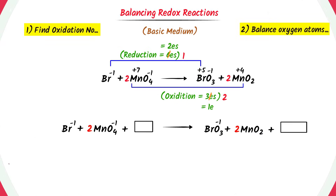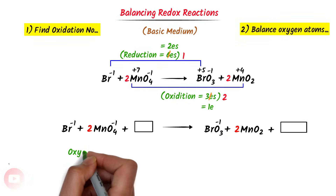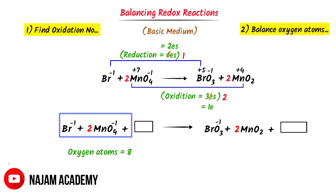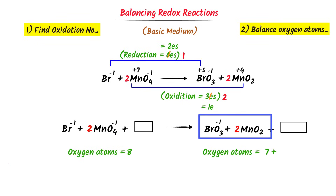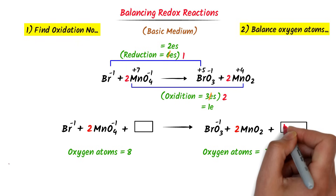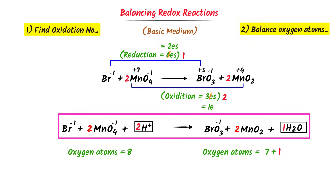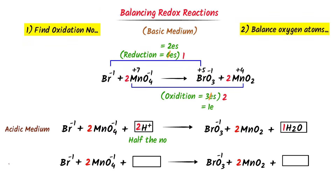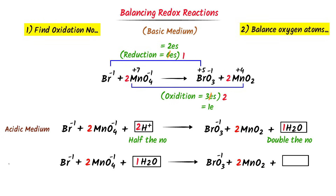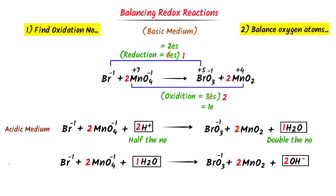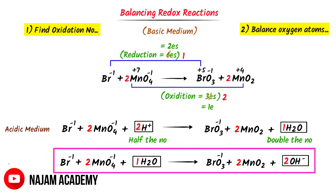The second step is to balance oxygen atoms. There are 8 atoms of oxygen in the reactants and 7 atoms in the products, so I place 1 water molecule on the product side. I double the number and place 2 hydrogen ions. This is the balanced redox reaction in acidic medium. To convert to basic medium: I half the hydrogen ions and replace with 1 molecule of water, while doubling the water molecule and replacing with 2 hydroxide ions. Thus this is the balanced redox reaction in basic medium.